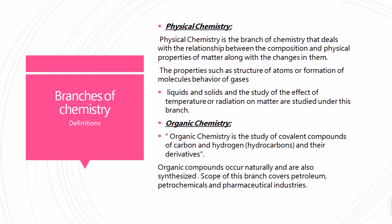The second branch is organic chemistry. The word 'organic' relates to carbon atoms — when we hear organic chemistry, the first thing that comes to mind is hydrocarbons. Organic chemistry is the study of covalent compounds of carbon and hydrogen — hydrocarbons and their derivatives. Organic compounds occur naturally and are also synthesized. Its scope covers the petroleum, petrochemical, and pharmaceutical industries.